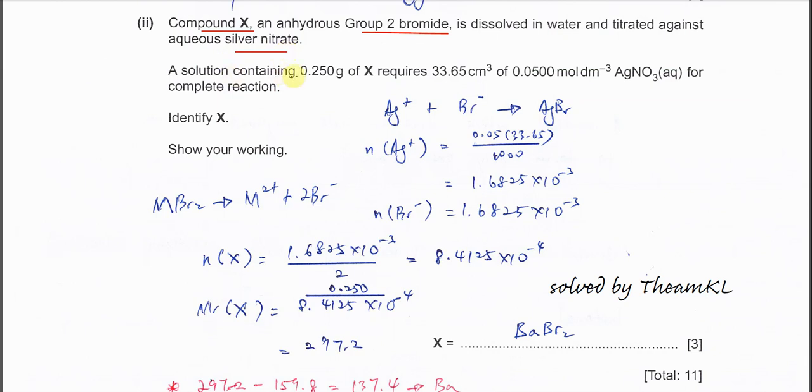A solution containing 0.25g of X required 33.65 cm³ of 0.050 mol/dm³ AgNO3 for complete reaction. The first thing you need to do is find the moles of silver. You can use MV/1000.